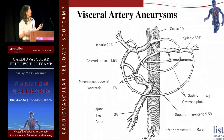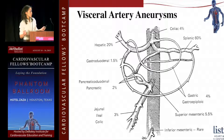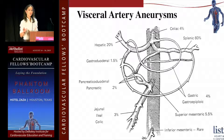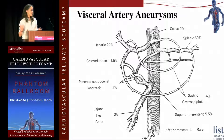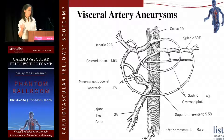The anatomy of the celiac and SMA involves a lot of collaterals. This diagram shows where the common visceral artery aneurysms are located. Most — about 60 percent — are in the splenic artery. The second most common involves the common hepatic artery, either the common hepatic or hepatic artery proper. Less commonly, the superior mesenteric artery, then the celiac, and other small branches can also have aneurysmal changes, but overall these are very rare.